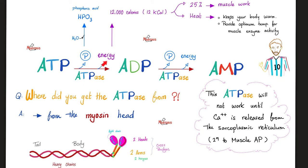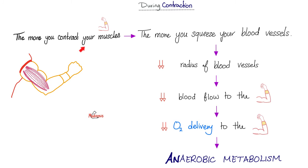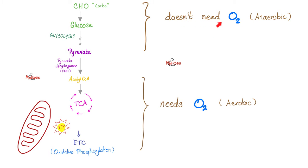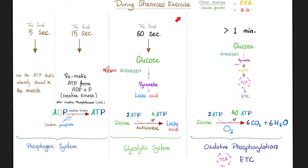When you break down ATP, you release energy. The more you contract your muscles during strenuous, vigorous exercise, the more you squeeze your blood vessels, decreasing their radius and therefore blood flow and oxygen delivery to the muscle. Also, with strenuous exercise, even though you might be breathing fast, the lungs cannot keep up with all your contracting muscles, so you end up in anaerobic metabolism. Glycolysis is anaerobic — it produces little ATP and does not need oxygen. If you have enough oxygen, you go to the aerobic stage: the TCA cycle and electron transport chain produce more ATP.